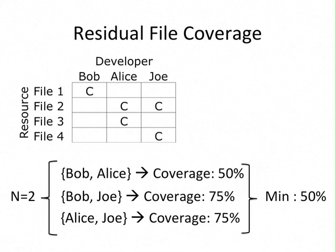We can continue and consider the case where two developers have been hit by a truck. We consider all possible sets of two developers: Bob and Alice, Bob and Joe, and Alice and Joe. We find out that the lowest residual file coverage is achieved when Bob and Alice are hit by a truck. So we take this worst case as the residual file coverage. Given that we can compute the residual file coverage for different numbers of developers considering the worst case, we can then properly compute the truck factor.